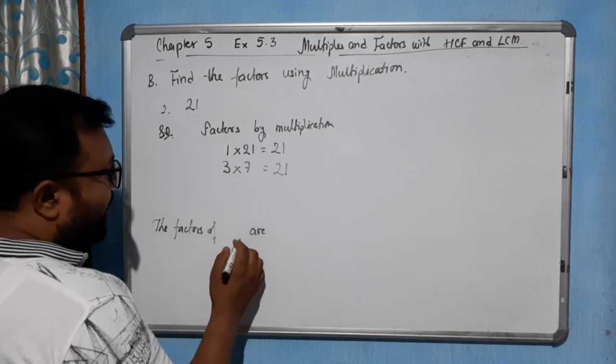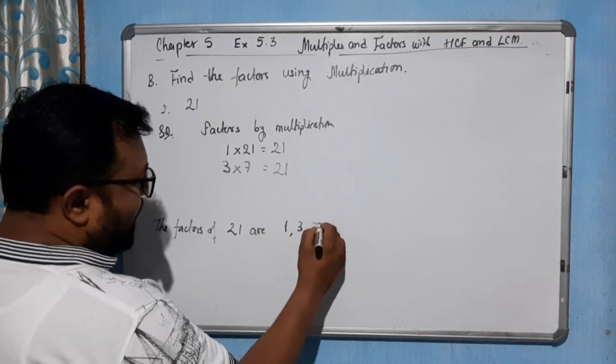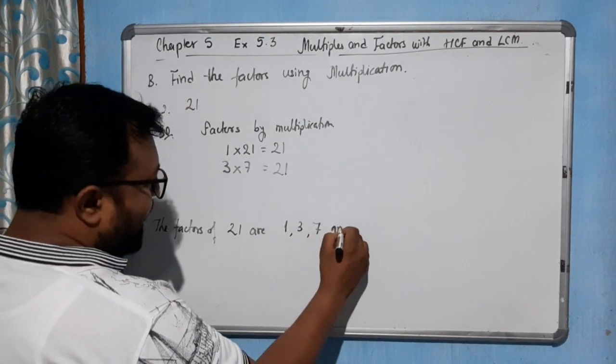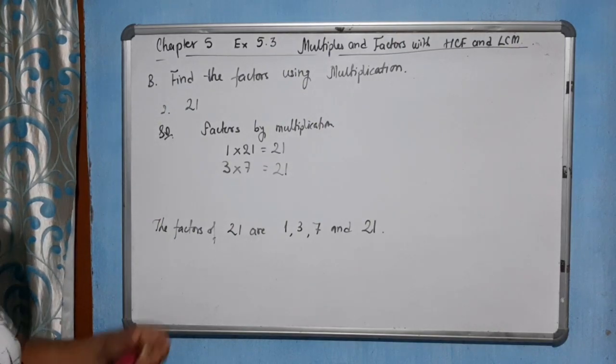So the factors of 21 are 1, 3, 7, and 21. In this way, by doing multiplication, we will try to find the factors.